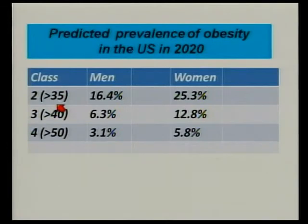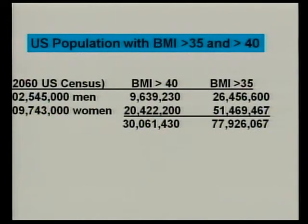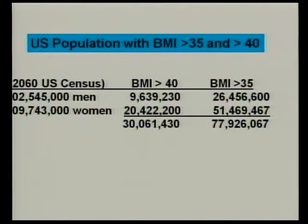Notice we now call a BMI of 35 a class 2 obesity — talk about downgrading severity. And notice that in a decade, one-fourth of the women in this country will exceed that BMI. If you look at the numbers for 2020, this means we will be confronted with 30 million Americans with a BMI over 40, and 72 million Americans with a BMI over 35.